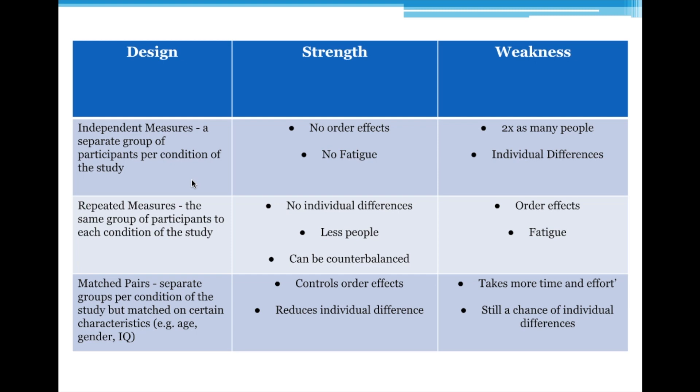So that's why you need to be careful — if you say independent measures design is where you've got two different groups, that's not technically accurate. It's where you've got a separate group per condition of the experiment.